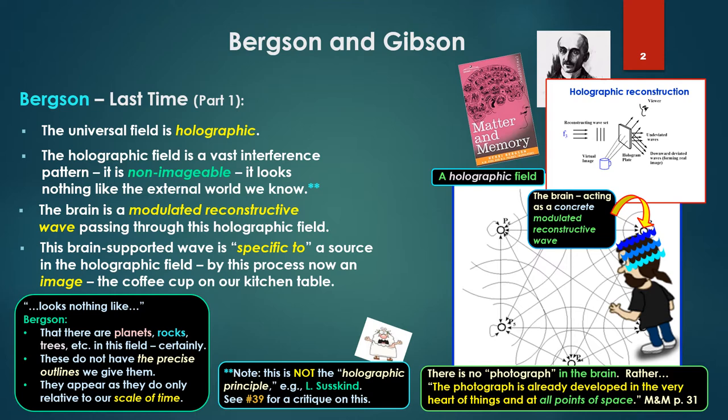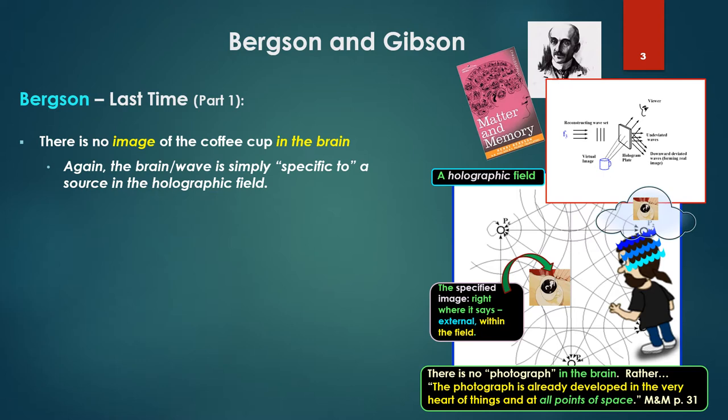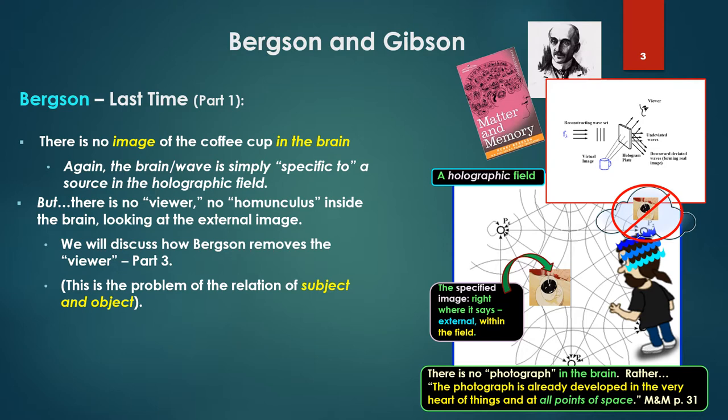The brain analogously is the modulated reconstructive wave passing through what is in effect a 4D holographic plate, the universal field. This brain-supported reconstructive wave is specific to specifying a source in the holographic field. By this process, now an image of this otherwise non-imageable field - the coffee cup on our kitchen table. There is no image of the coffee cup in the brain. The brain/wave is simply specific to the source in the holographic field. But there is no viewer, no homunculus. We're removing the viewer from that scene inside the brain looking at the external image. We'll discuss how Bergson removes the viewer in part three. This is the problem of the relation of subject and object.